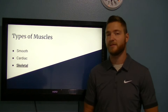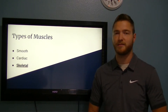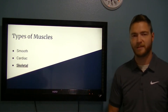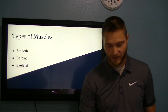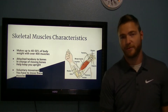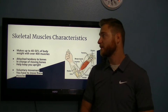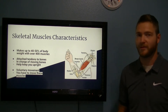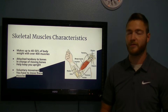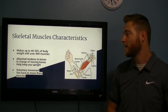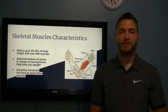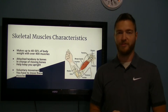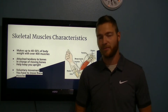There are three different types of muscles: smooth, cardiac, and skeletal. Skeletal is the main muscle group we'll be focusing on today. The characteristics of a skeletal muscle are that it makes up 40 to 50% of your body weight, and there are more than 400 skeletal muscles in your body. Their main purpose is they attach to tendons and bone, and they are in charge of moving muscles and helping your body stay upright.